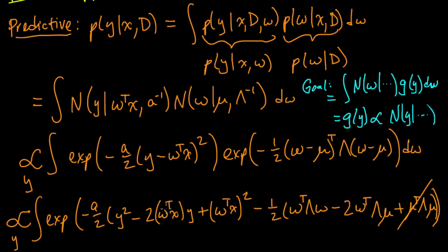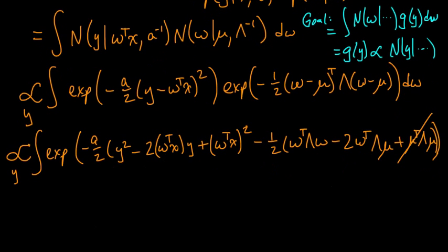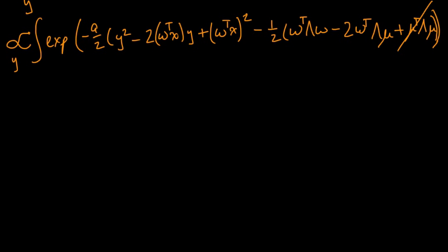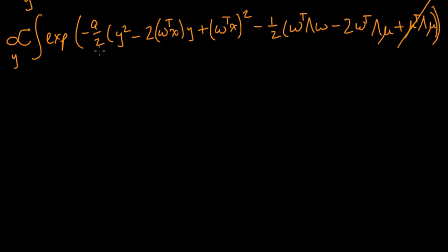The next step in this general plan is to get this in the form of a normal over w. How are we going to do that? Let's make a little room here. Let's focus on the exponent—that's the part that really matters. Let's pull out the minus one-half. There's a minus one-half on both sides, so let's go ahead and pull that out.